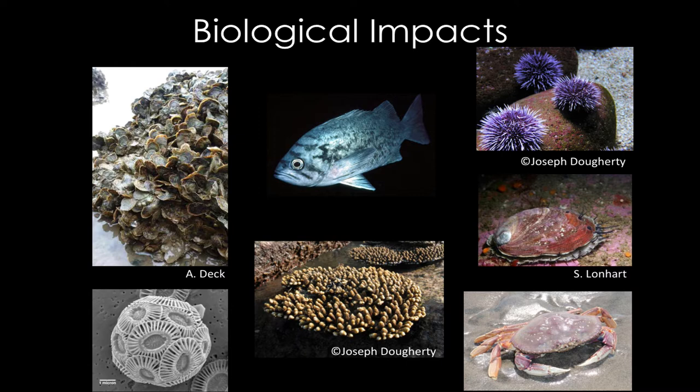In addition to this impact on calcium carbonate organisms, changing the pH of an environment has an impact in other ways. All of these plants and animals living in our ocean today have adapted to a relatively high pH of about 8.2. As that declines, it impacts other things besides just the hard body parts. One thing currently being studied is how a change in pH impacts clownfish and their ability to smell in the water.